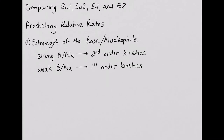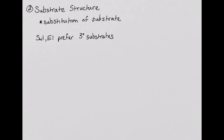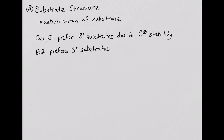The next factor we will consider in predicting the relative rates of these different mechanisms is the substrate structure — primarily the substitution of the substrate. Remember that a good leaving group favors all of the mechanisms, and therefore will not favor one over the others. The SN1 and E1 mechanisms prefer tertiary substrates, due to the increased stability of the carbocation formed from a tertiary alkyl halide. The E2 mechanism also prefers a tertiary substrate; however, this is due to Zaitsev's rule — the more substituted alkene product is more stable and therefore forms more quickly.